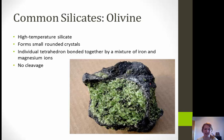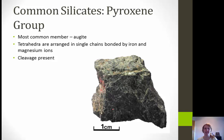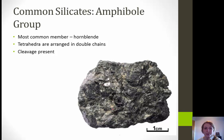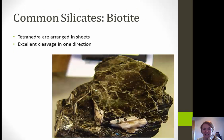First we'll look at dark-colored silicates, called ferromagnesian minerals. Olivine is a high-temperature silicate that forms small rounded crystals; individual tetrahedra are bonded together by a mixture of iron and magnesium ions, and it has no cleavage — in the sample, the green is the olivine. Next, the pyroxene group: the most common mineral is augite, with tetrahedra arranged in single chains bonded by iron and magnesium, and cleavage is present. Next, the amphibole group: the most common mineral is hornblende, arranged in double chains, with cleavage present.